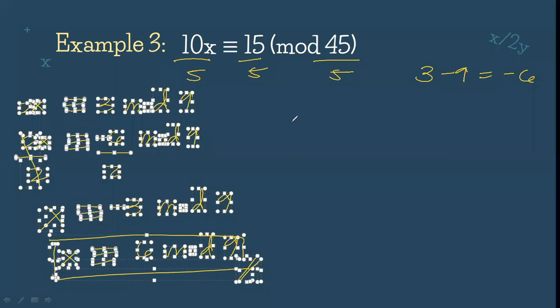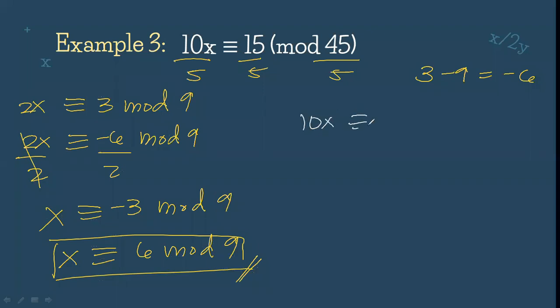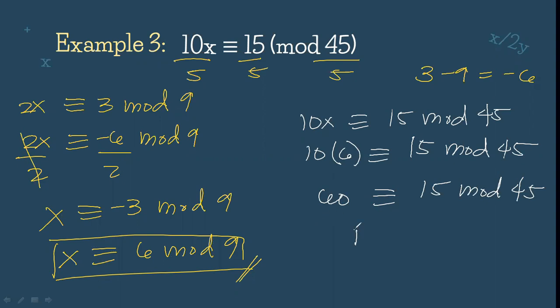Let's check if our answer is correct. 10x is congruent to 15 mod 45. That is 10 times 6 is congruent to 15 mod 45. So 60 must be congruent to 15 mod 45. Let's divide manually: 60 divided by 45 is 1 with remainder 15. As you can see, it has a remainder of 15. Therefore, it's true that x must be 6.